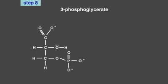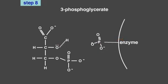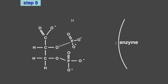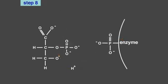In the eighth step, 3-phosphoglycerate, which has a relatively low free energy of hydrolysis, is transformed by the enzyme phosphoglycerate mutase into 2-phosphoglycerate.